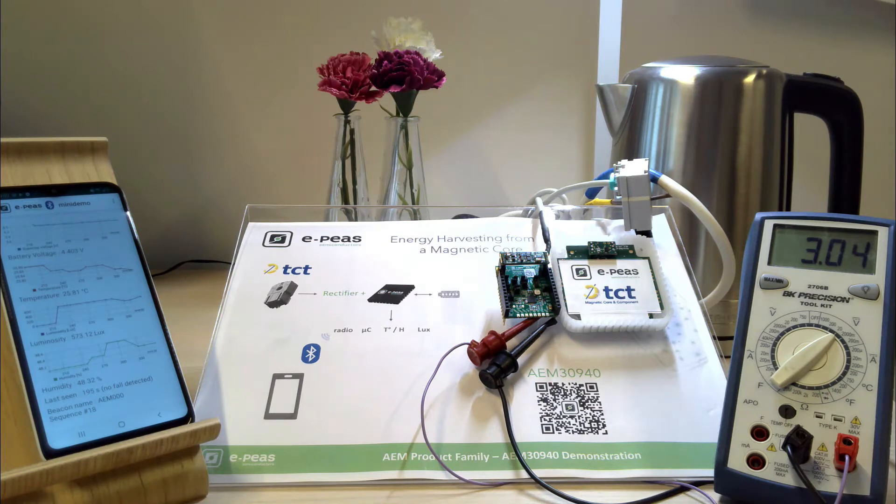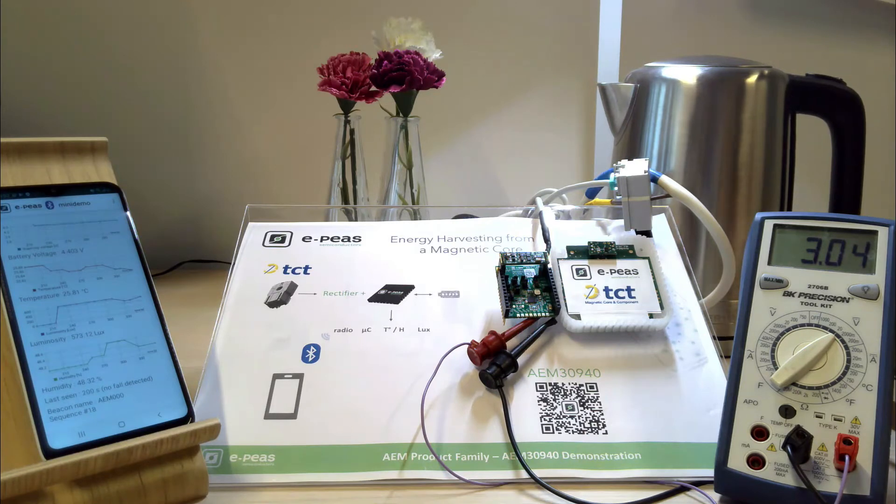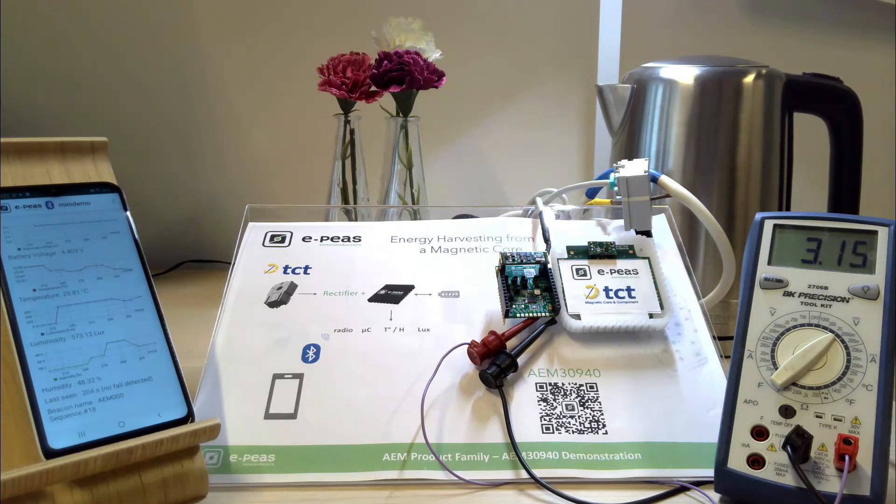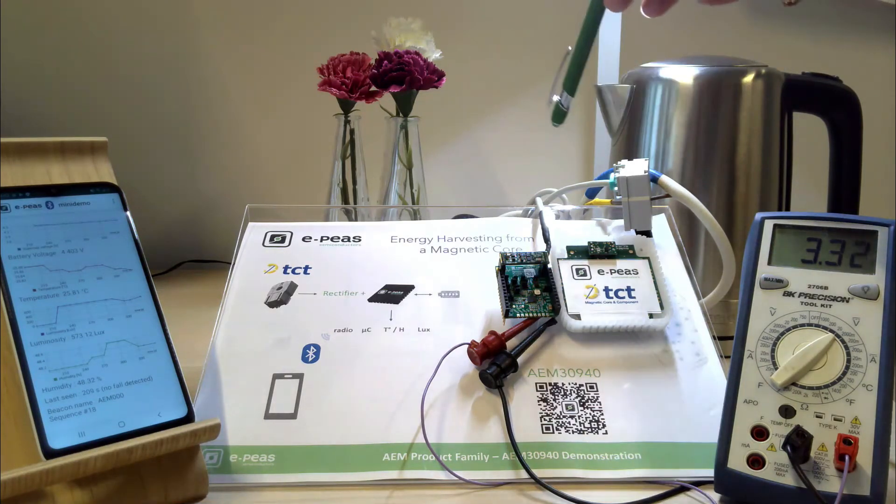Here we use a super capacitor. So let's get started. You will see that we are actually charging the super cap because some current is going through the harvester.